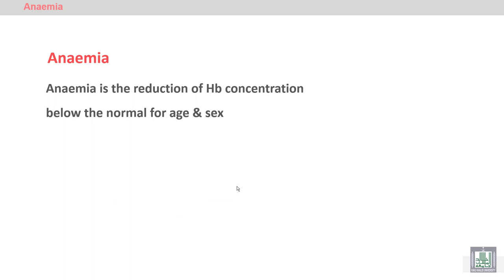Anemia is a disease characterized by a reduction in hemoglobin concentration inside the red blood cell, a decrease in the red blood cell count, and a decrease in the hematocrit or packed cell volume below the normal for age and sex. We should consider that the normal ranges differ from children to adults to elderly, and between male and female.